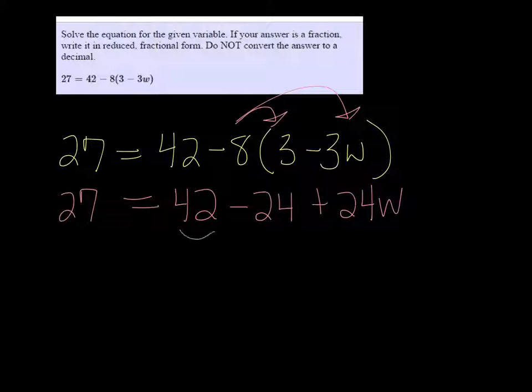Combining like terms, 42 minus 24 is 18. So we have 27 equals 18 plus 24w.